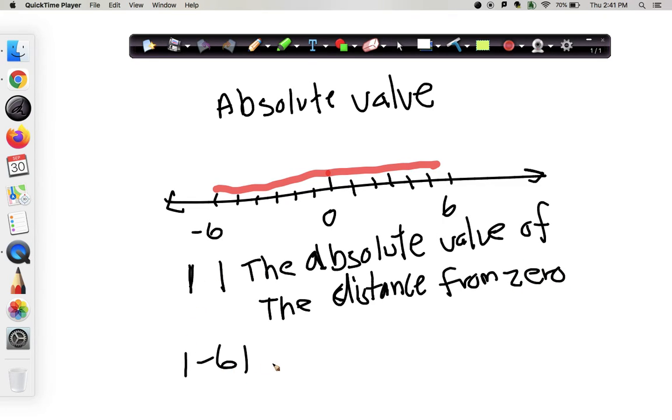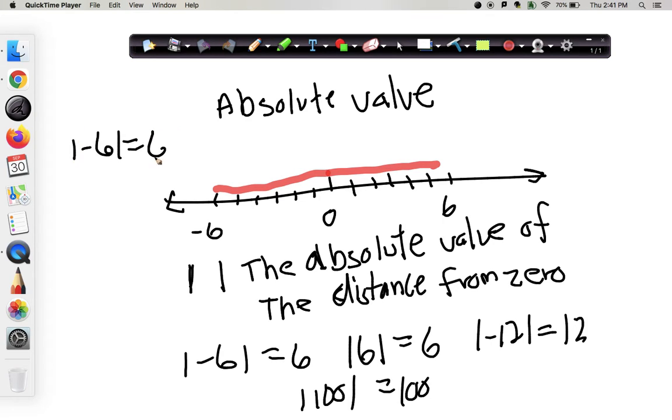So the absolute value of negative 6 is equal to 6. The absolute value of 6 is equal to 6. The absolute value of negative 12 is 12. The absolute value of 100 is 100. It's the distance from 0. And we talked about if everyone lived maybe a mile or 2 from school, it doesn't really matter what direction. It's just 1 or 2 miles. That distance in a straight line is just a positive amount. So we practice that, saying the absolute value of negative 6 equals 6, the absolute value of 10 equals 10. Take a moment if you're watching this and just say that out loud so you hear it.